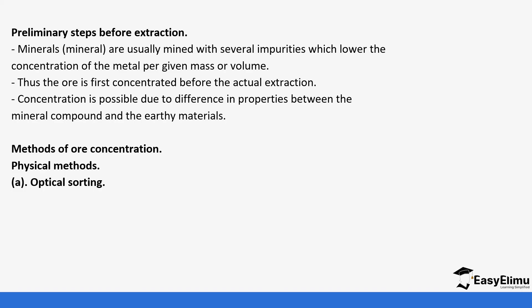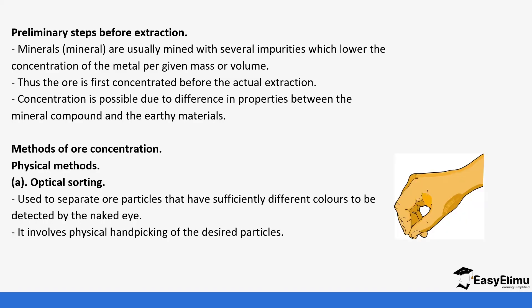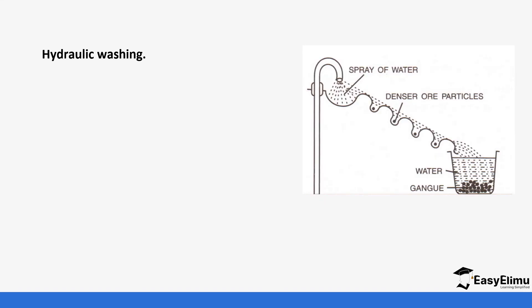Methods of ore concentration include physical methods. Optical sorting is used to separate ores that have different colors that can be detected by the naked eye. It involves hand-picking of the desired particles. It is usually used for minerals containing transition elements such as chromium. For example, if you put chromium in soil or sand particles, it has a different shine which helps people extracting to tell the difference.